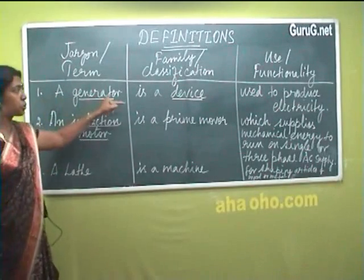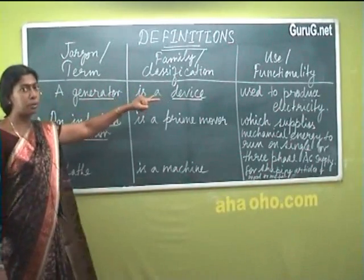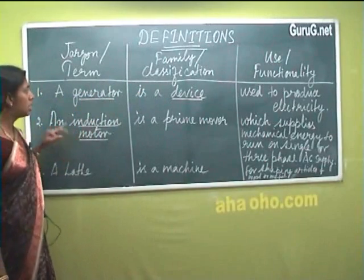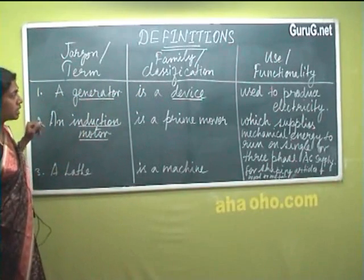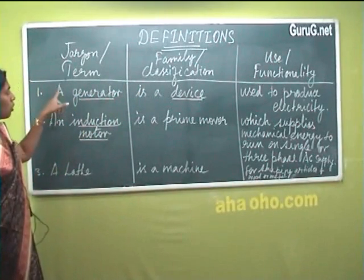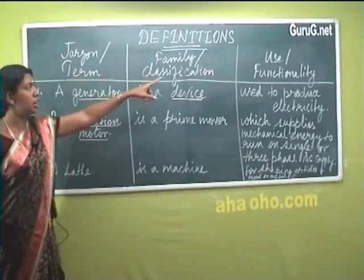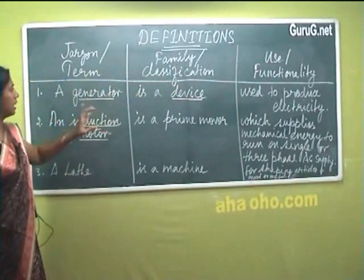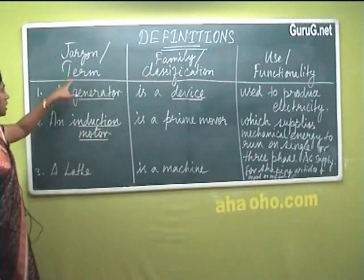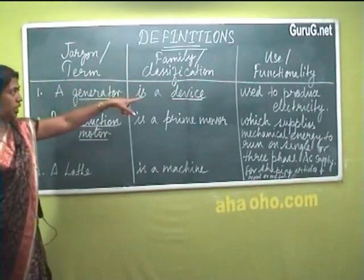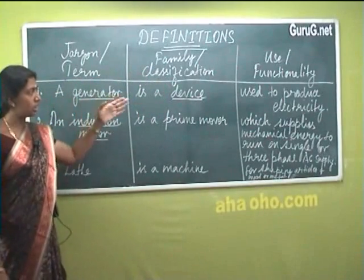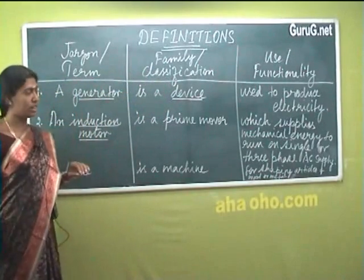The language should be simple, and the language is simple here. The third rule is that it should have all three components — term, classification, and functionality — and all three are present in this definition.